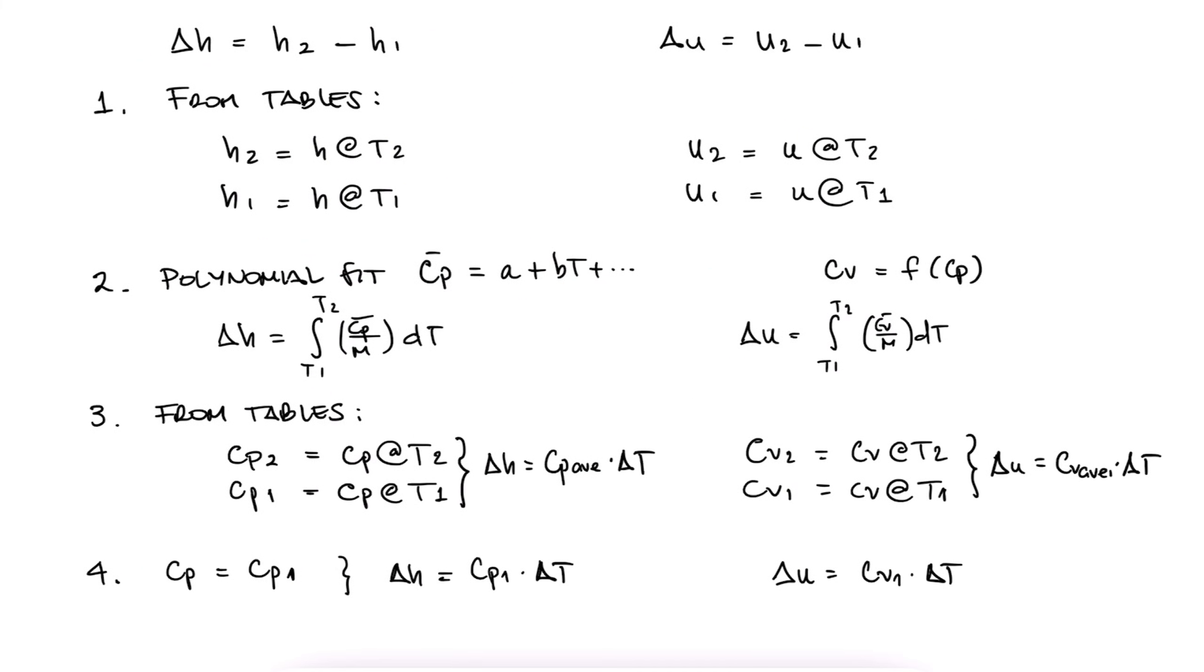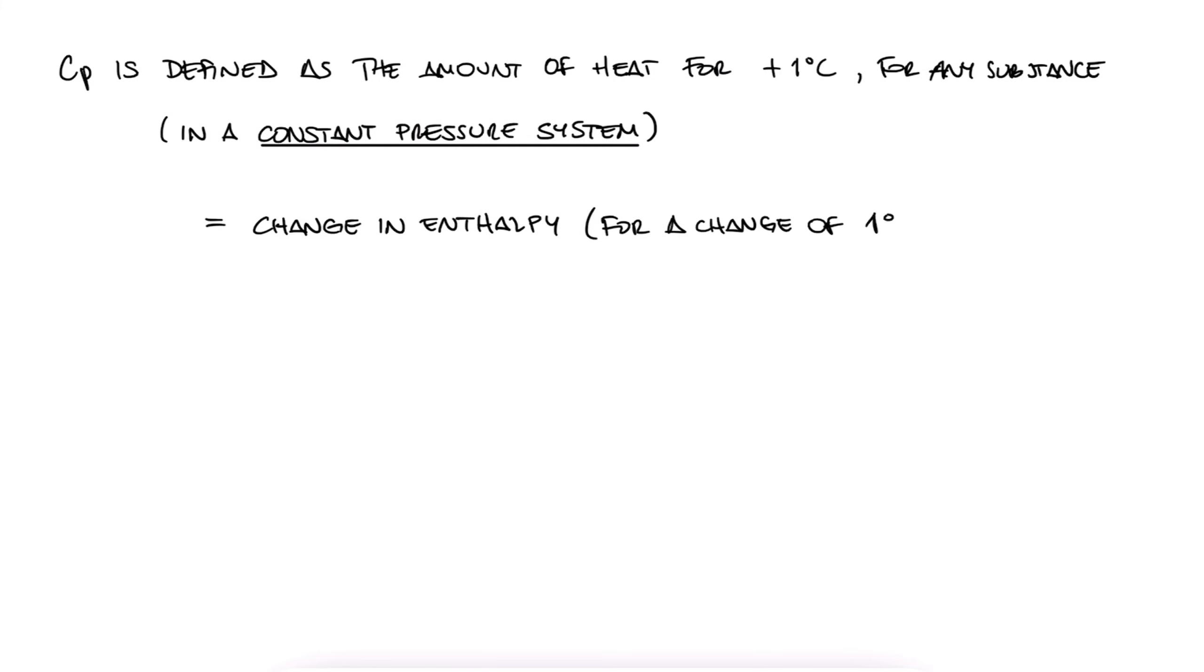Now, the third and last quick concept is about specific heats. Cp is defined as the amount of heat needed to add 1 degree Celsius to a substance in a constant pressure system, which by definition is equal to the change in enthalpy. But even if a process does not occur at constant pressure, you can still use Cp to calculate the change in enthalpy of an ideal gas.